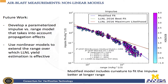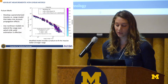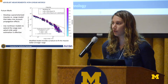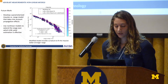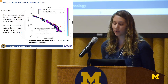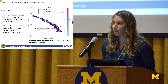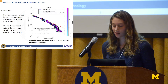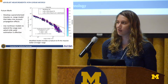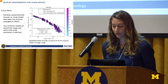The data begins to diverge from the models at longer range. In the future we'd like to develop models which capture the curvature of the data. This is an example of introducing a non-linear term to the model in order to capture that curvature. In future work we'd like to look into when and how the model goes non-linear in log-log space, in order to possibly extend the range over which we can accurately invert for yield.